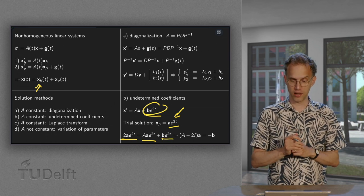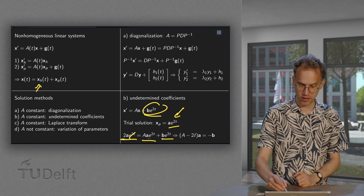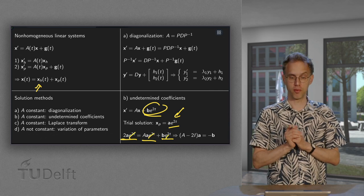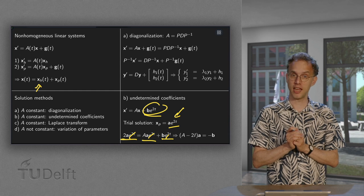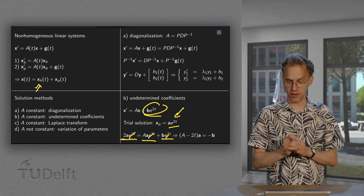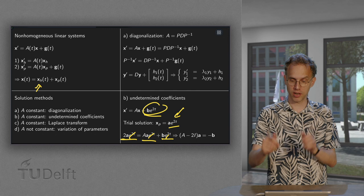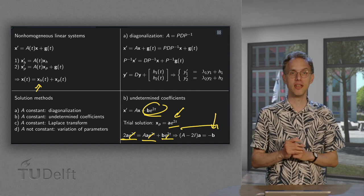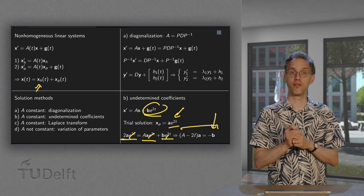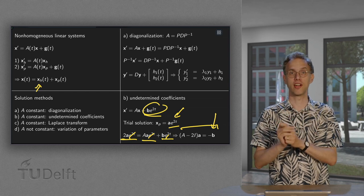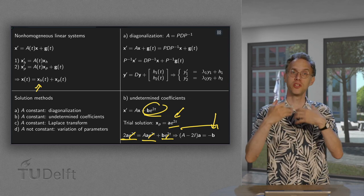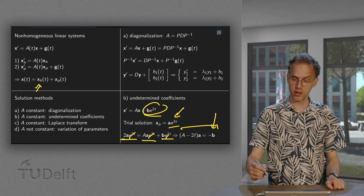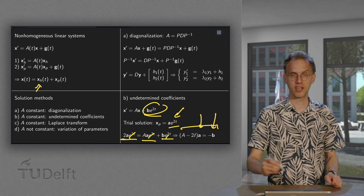And then you cancel factors e to the power 2t and you are left with the problem of the form A times a minus 2a equals b, which you can rewrite as a matrix equation over here. Notice you know the b. So now you have a problem of the form matrix times unknown vector. It's a vector you know. So you can use your linear algebra to figure out what this vector a should be.